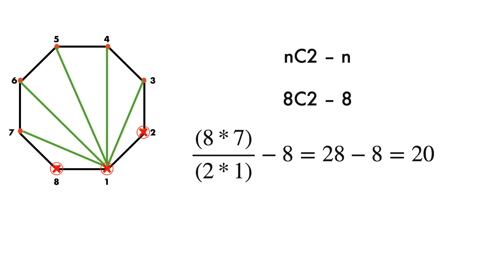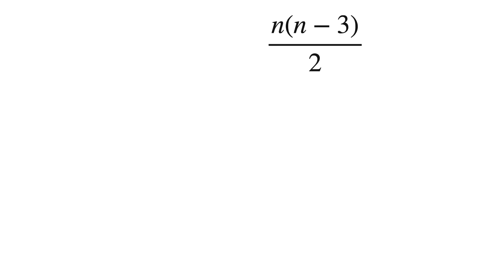There is another way which is easier compared to this technique. The number of diagonals of an n-sided polygon can also be calculated using the formula n times n minus 3 over 2.